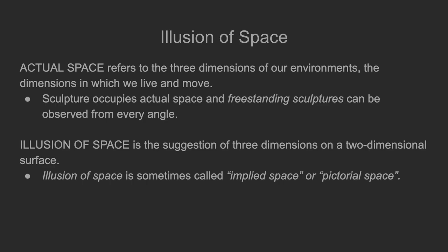Illusion of space. Actual space refers to the three dimensions of our environments — the dimensions in which we live and move. Sculpture occupies actual space, and freestanding sculptures can be observed from every angle.